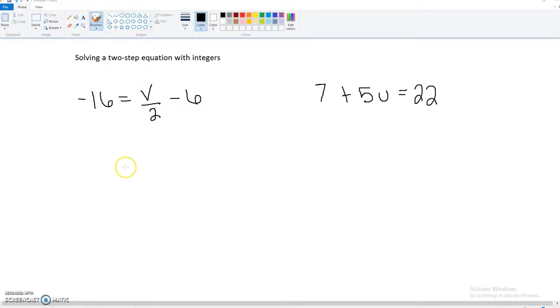All right, here's our first topic for week two. It's solving a two-step equation with integers. Now the difference between this and whole numbers is we've got a lot more positive-negative numbers involved. I've provided two examples.